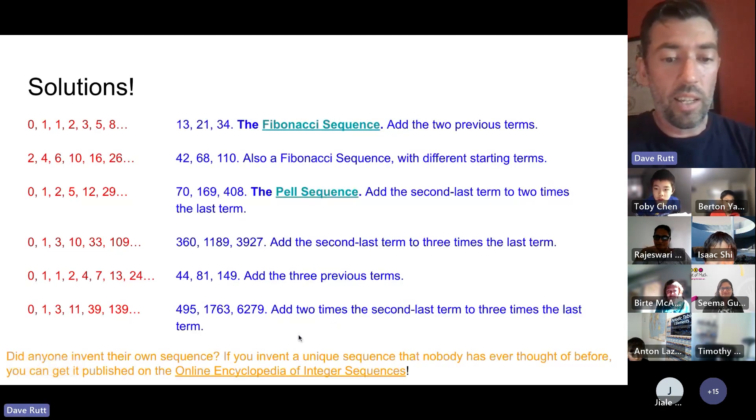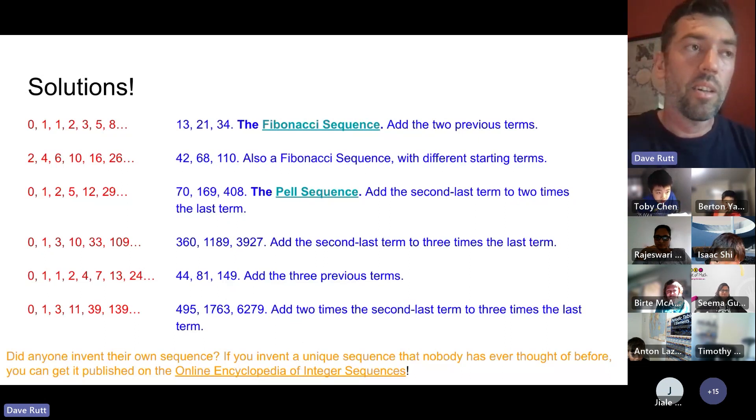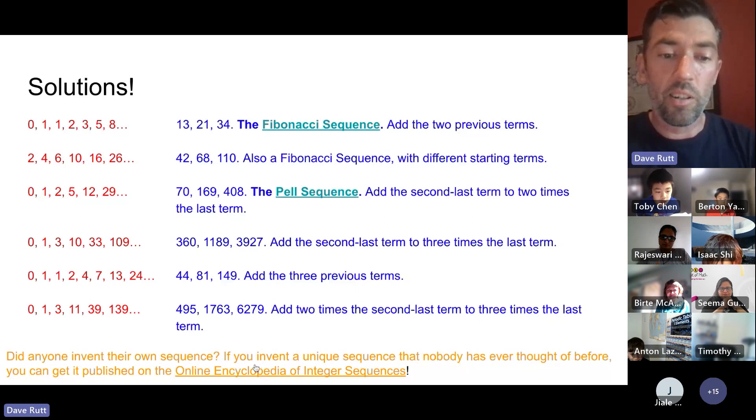I also want to show you that if you invent your own sequence, and nobody has ever invented it before, and if it's a useful and significant sequence, that you might actually be able to get it published online in something called the Online Encyclopedia of Integer Sequences.